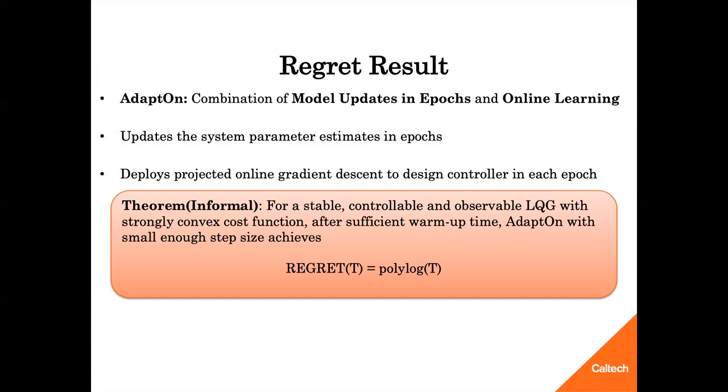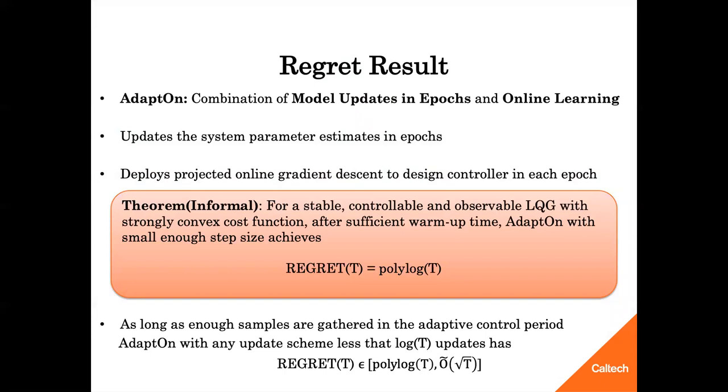Note that AdaptOn is polynomial time. Moreover, due to doubling length of each epoch, AdaptOn updates the system parameter estimates for log T times. If there exists a computation budget limitation, such that AdaptOn requires to update model parameters less than log T, then the regret of AdaptOn is between polylog T and square root T. This recovers the prior result in literature, which achieves square root T by updating only after the warm-up period.